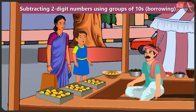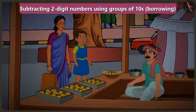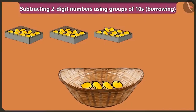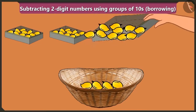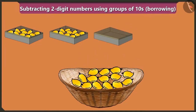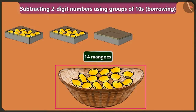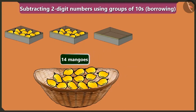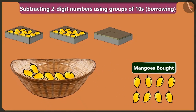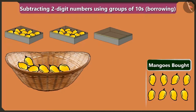Mommy, the mango seller has only four loose mangoes. So how will he give us eight mangoes? I will empty one box of ten mangoes in this basket. So look, now there are ten and four — fourteen mangoes in this basket. Bubbly, now tell me, if you buy eight mangoes out of the fourteen mangoes, then how many mangoes would the fruit seller be left with?